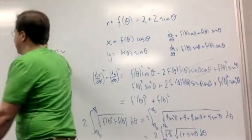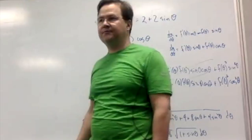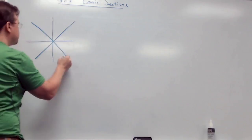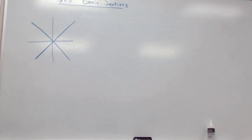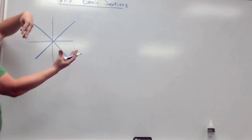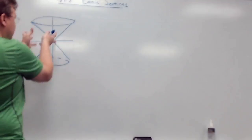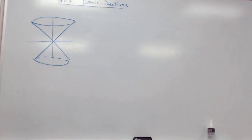Conic sections are sections of a cone. If you draw the lines y equals x and y equals negative x, you have two lines intersecting through the origin. If you take those lines and revolve them around the y-axis, you get an hourglass shape. In reality, it actually extends infinitely far in both directions, so it might be better referred to as a double cone.